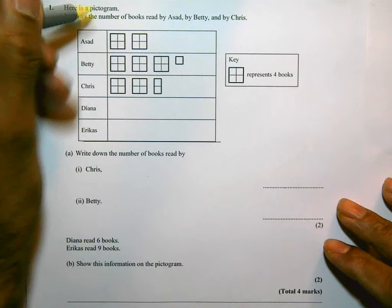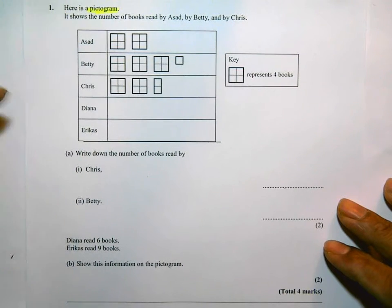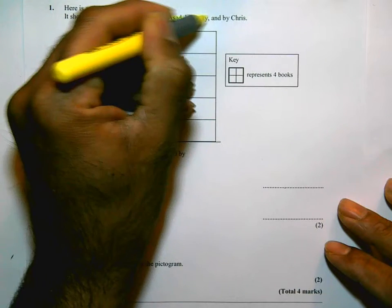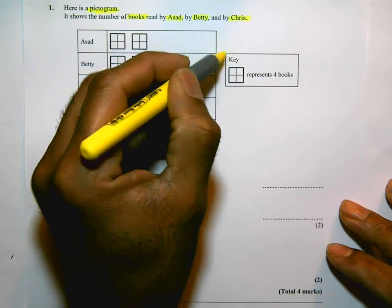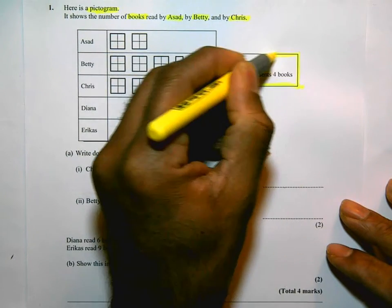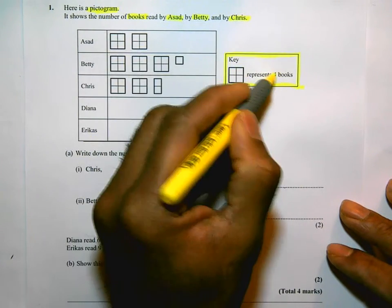The question goes: here's a pictogram, so they're telling you it's a pictogram. It shows the number of books read by Asad, Betty, and Chris. This is really important. There's a key on this side, and the key says one of these diagrams represents four books.